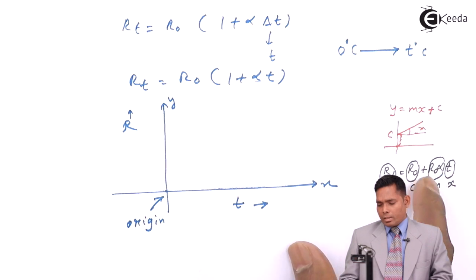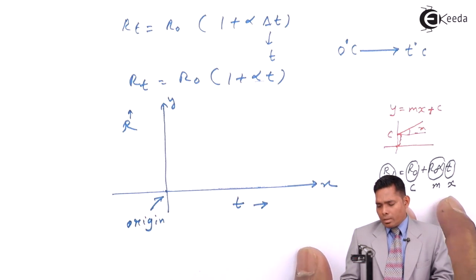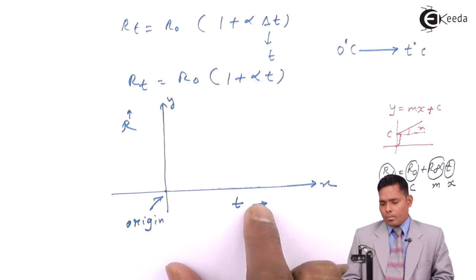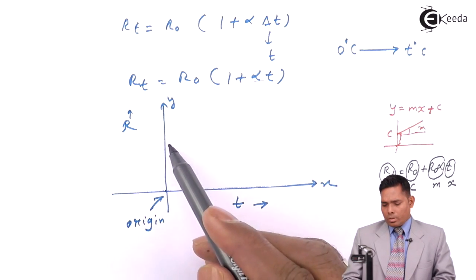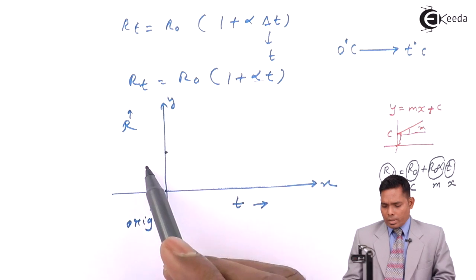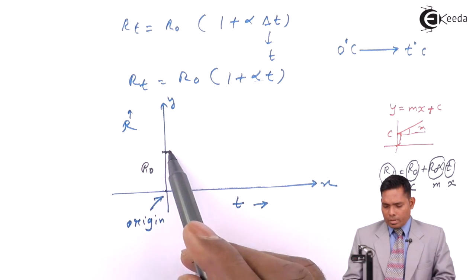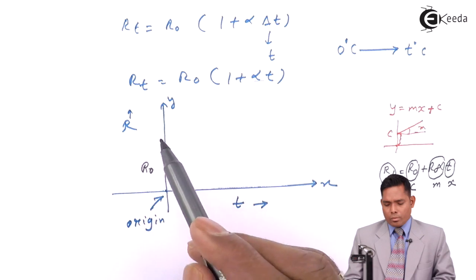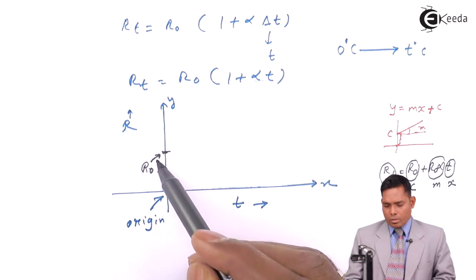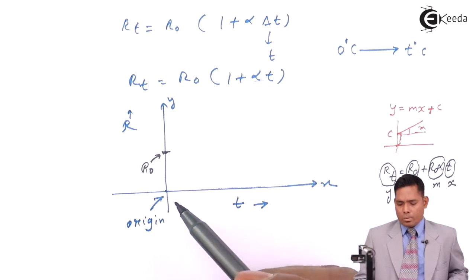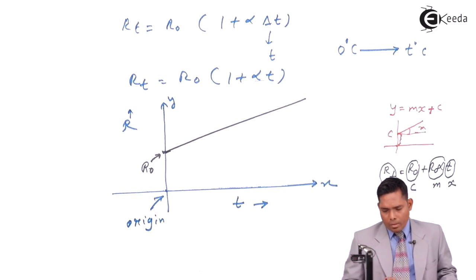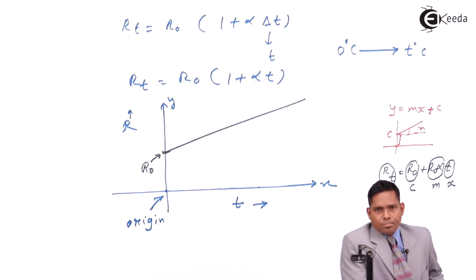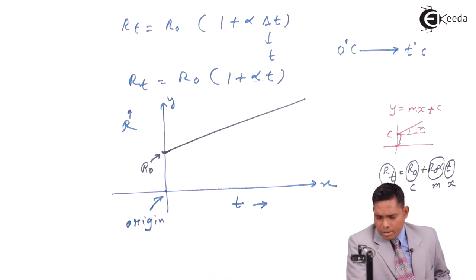From R0, you start giving values of resistance. So the y-intercept is R0, and the graph has a nature similar to a straight line rising from R0. However, in reality this graph is not a straight line, because we have neglected some terms — the expression also depends on higher powers of T.